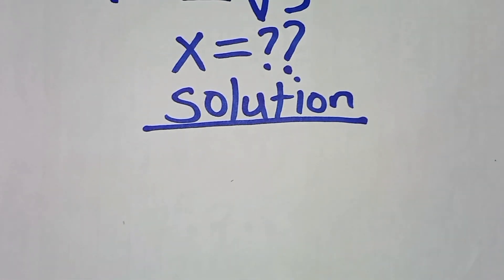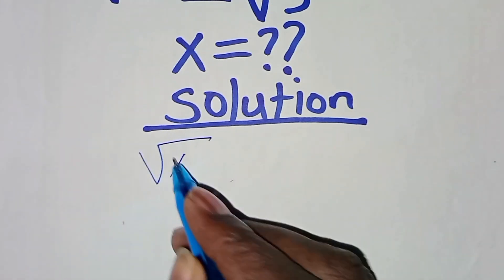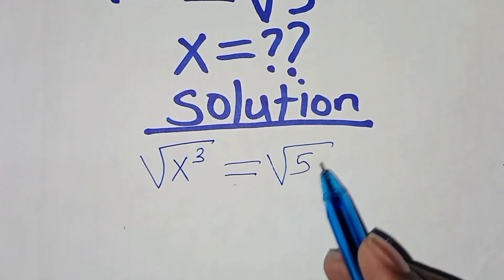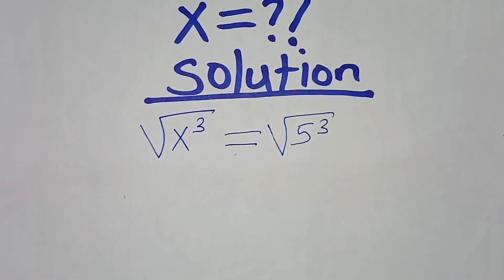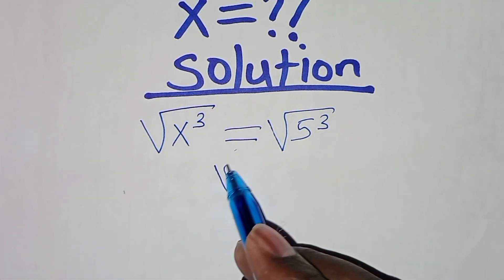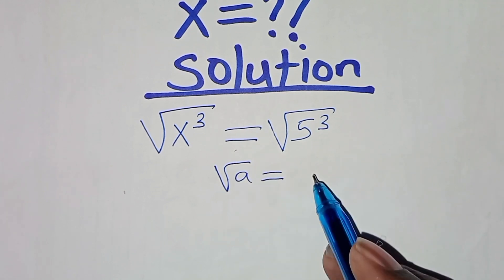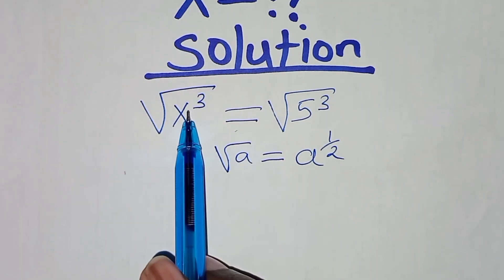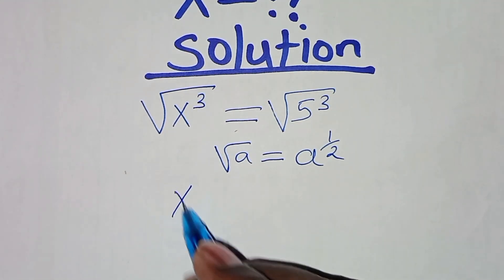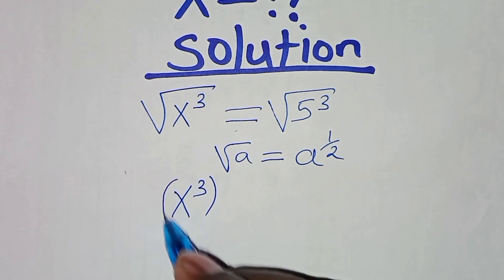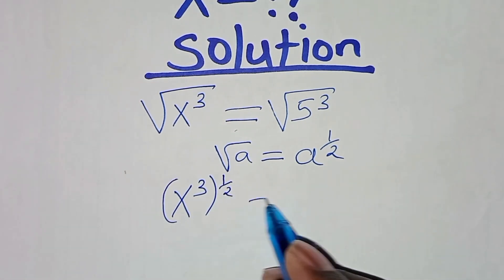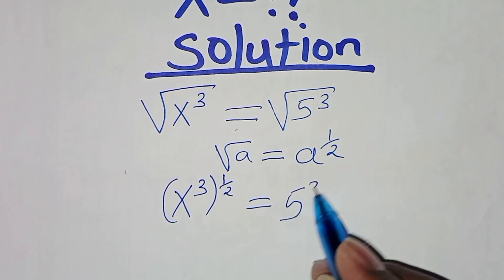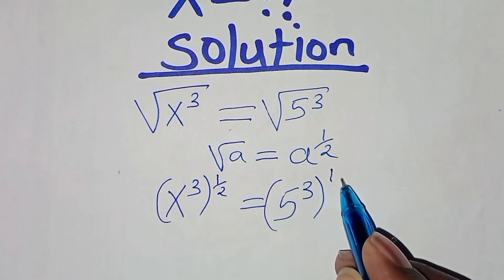In the solution, we have the square root of x to power 3 equal to the square root of 5 to power 3. The first thing to note is that the square root of a can be expressed as a to power one-half. So we can rewrite the left side as x to power 3, raised to power one-half, and the right side as 5 to power 3, raised to power one-half.